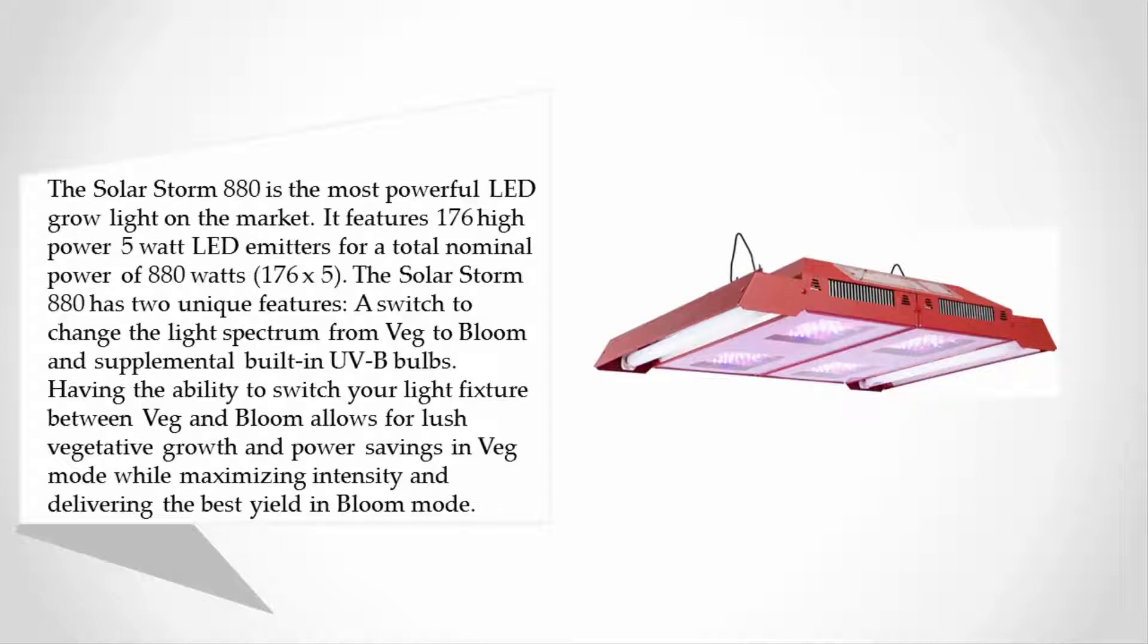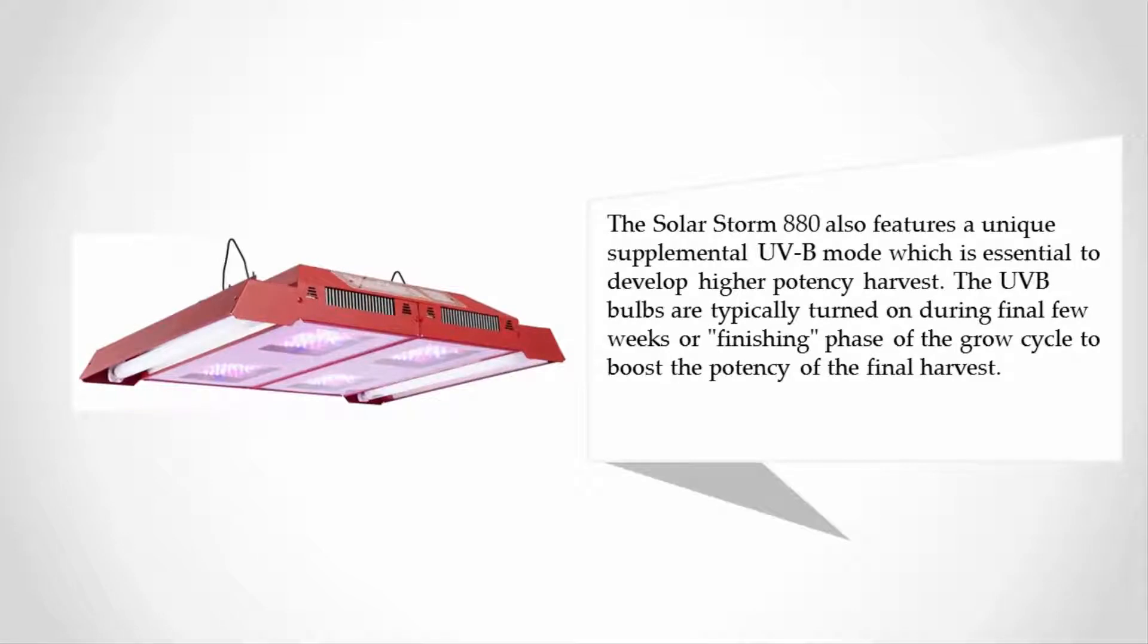Having the ability to switch your light fixture between veg and bloom allows for lush vegetative growth and power savings in veg mode, while maximizing intensity and delivering the best yield in bloom mode.